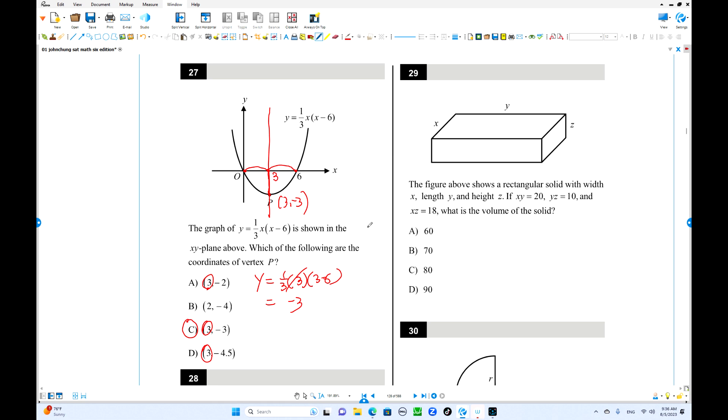Number 29. The product of the dimensions x, y is 20. y, z is 10. And x, z is 18. What is the volume of this solid? So we can define the volume of this solid in terms of x, y, z. Volume is x times y times z. Maybe you can plug some numbers. x, y is 20. y, z is 10. z, x equals 18.